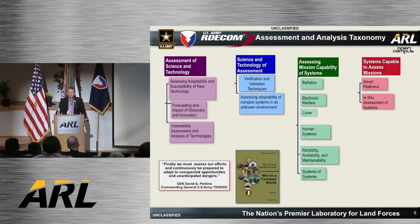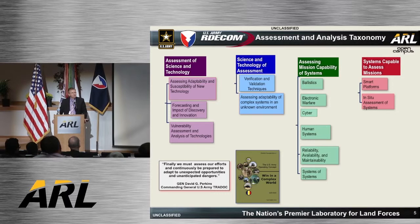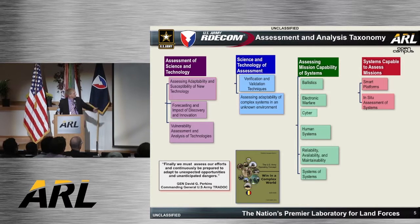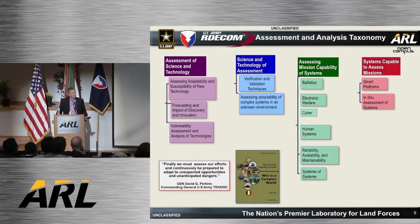Our taxonomy has four major areas: assessing the S&T, the S&T of assessment, assessing the mission capability of systems, and systems capable of assessing missions. Let me start with the green one — our third area — that's where the preponderance, the majority, of our work is today. The top three are core competency threat areas that we understand: ballistics, EW, and cyber. So we do a lot of assessment of systems.